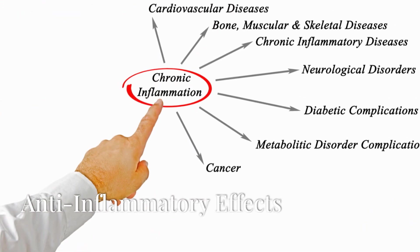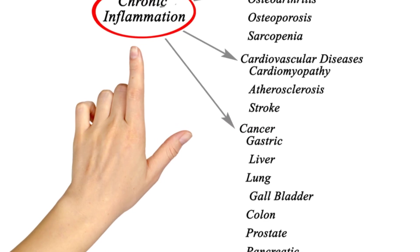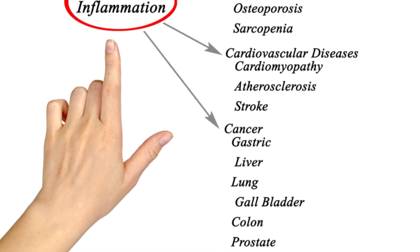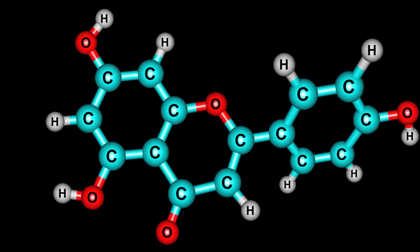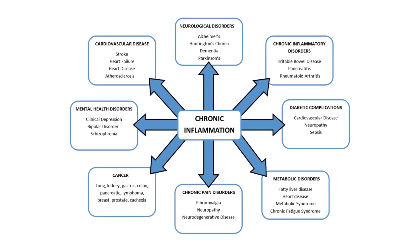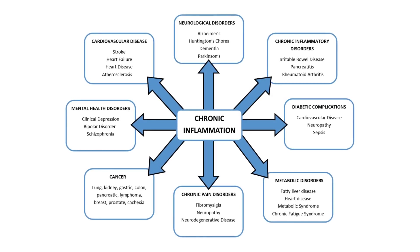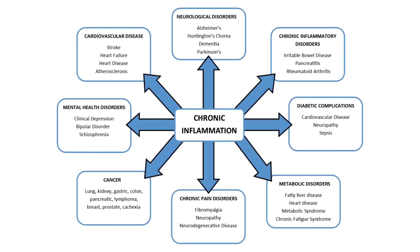Chronic inflammation is a root cause of many diseases, and astaxanthin has significant anti-inflammatory properties to combat it. It works by inhibiting the expression of inflammatory cytokines like TNF-alpha and IL-6 and reducing the activity of inflammatory enzymes such as cyclooxygenase. This reduction in inflammation can benefit overall health and help manage chronic inflammatory conditions.